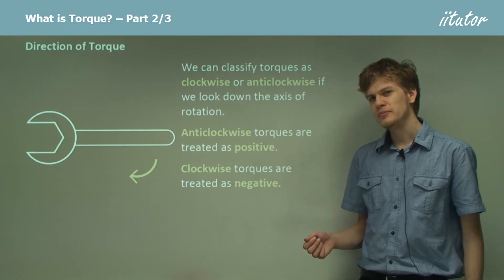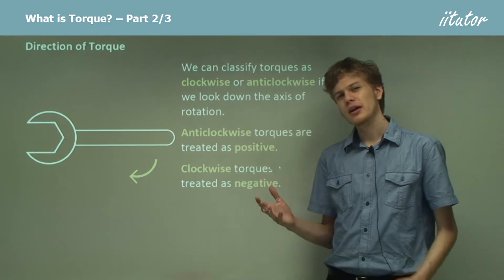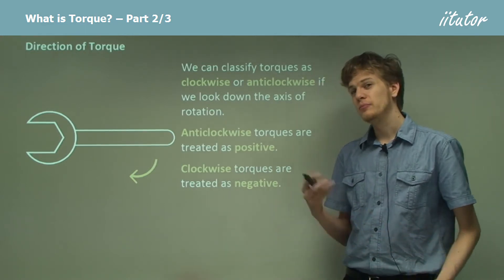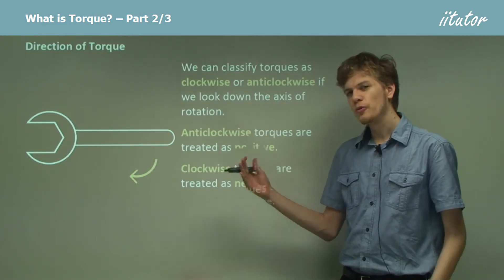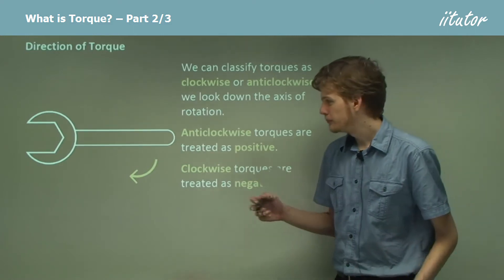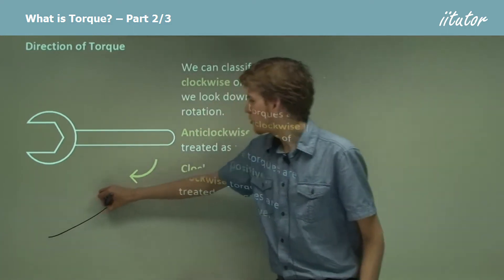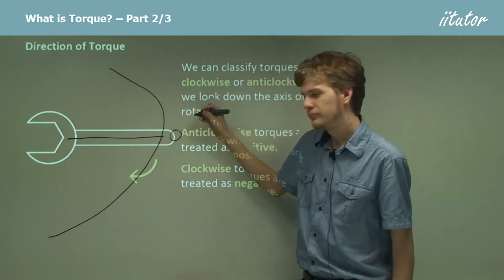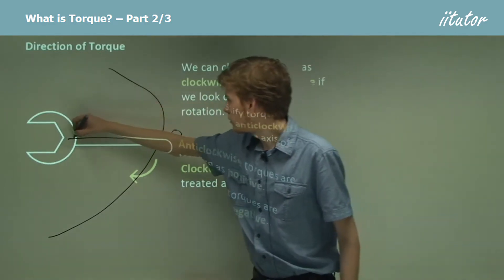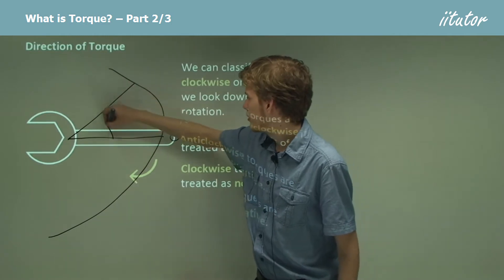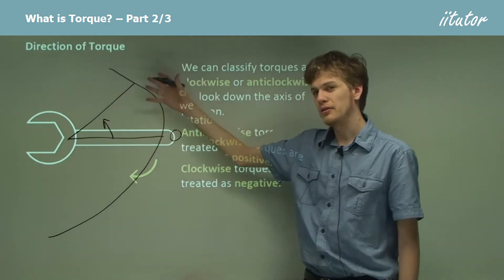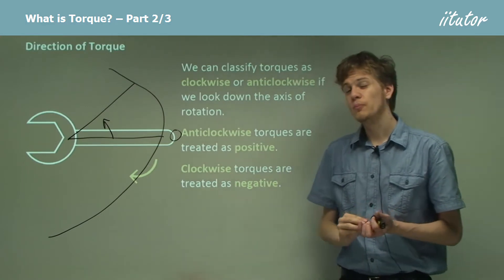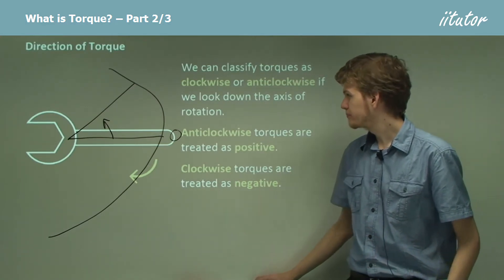Now first this might seem a little confusing, but remember that if we're ever talking about angles in mathematics, we can often talk about them as parts of a circle. And if we were to draw a circle and say that going straight across is zero, then when we increase the angle, we can talk about raising up the thing like that. So going anti-clockwise is positive.